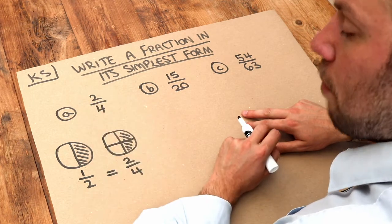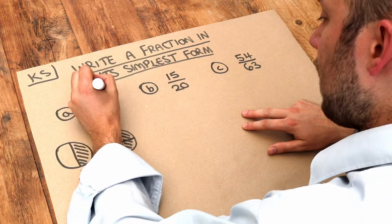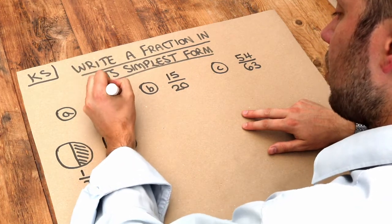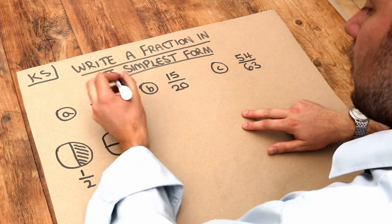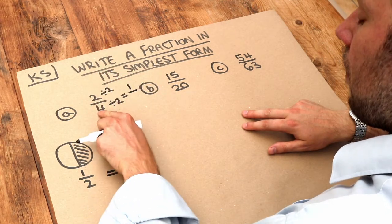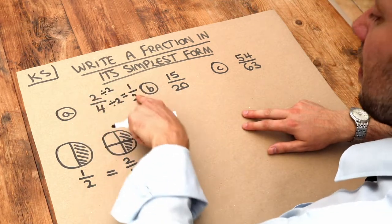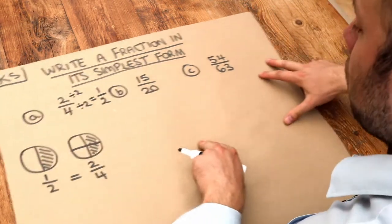Now 2 and 4, you can divide both of them by 2 without a remainder. So if I divided 2 by 2 and 4 by 2, 2 divided by 2 is 1 and 4 divided by 2 is 2. So 2 quarters is the same as a half, and that's the fraction in its simplest form.